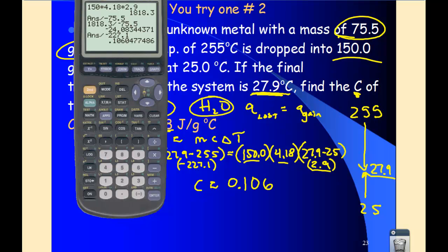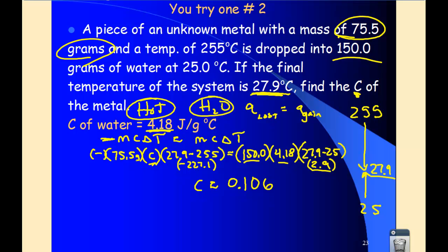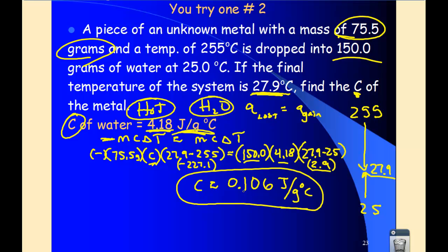For units, we know the specific heat of water has units of joules per gram degree C, so this will also be joules per gram degree C. That's a reasonable specific heat — 0.1 — for a metal. Notice the temperature of the water only rose 2.9 degrees, whereas the metal dropped over 200 degrees. A few reasons: the water is more massive — almost double — and the specific heat of water is 4.18, so it takes a lot of energy to change the temperature of water, while metals have much lower specific heats. So it makes sense that the final temperature is closer to that of water than that of the metal.